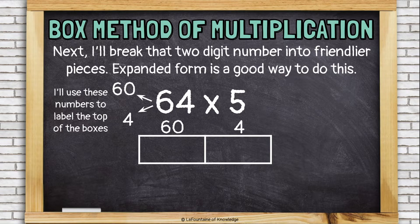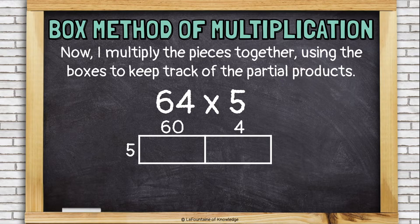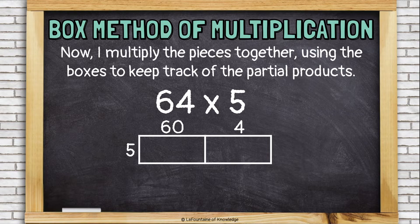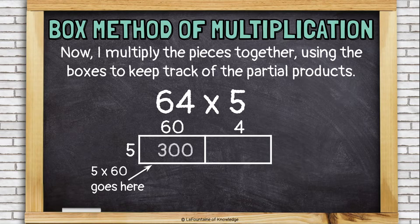Then, the five, the one-digit number five, goes along the side. Now, I'm ready to multiply. I'm going to multiply the pieces together using the boxes to keep track of the partial products. In this first box, I'm multiplying 5 times 60, which is 300.